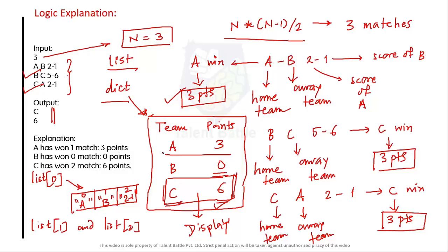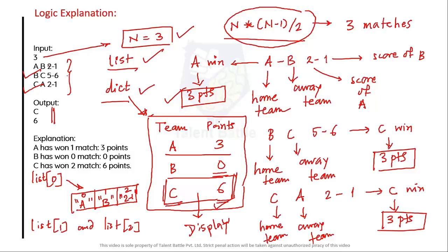To summarize the logical approach: first take input N (number of teams), then maintain a list and dictionary. Use the formula N*(N-1)/2 to determine how many match inputs to take. Take those inputs in a space-separated way. In some cases you can also apply a reverse engineering approach based on the input itself.